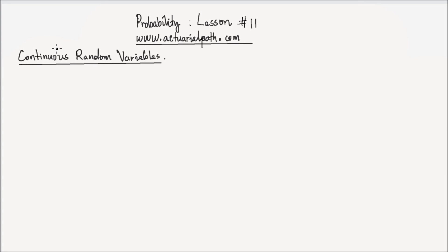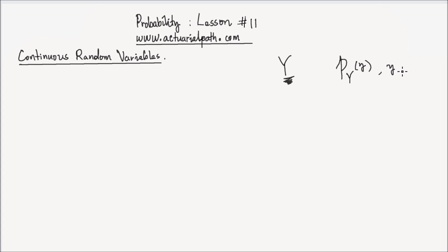Hi, this is lesson number 11 on probability. In this lesson, we study continuous random variables. In our last lesson, we studied discrete random variables. We said if we had a discrete random variable y, the probabilistic distribution of this discrete random variable y can be explained by what we call the probability mass function, p of y of little y, for all y which is in the support of the random variable y.